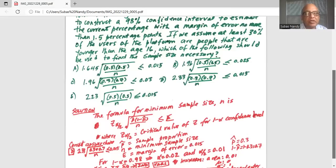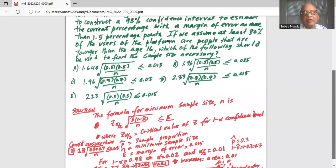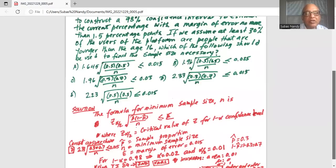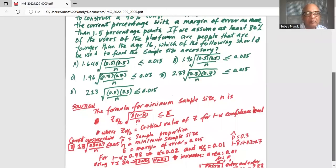Now z alpha by 2, the critical value of z times the term under the square root, which is standard error. So z alpha by 2 multiplied by standard error is less than or equal to margin of error. Now standard error is the standard deviation of the sampling distribution of p hat.